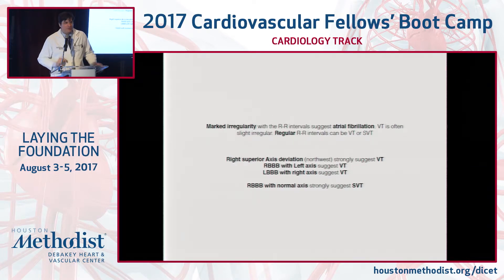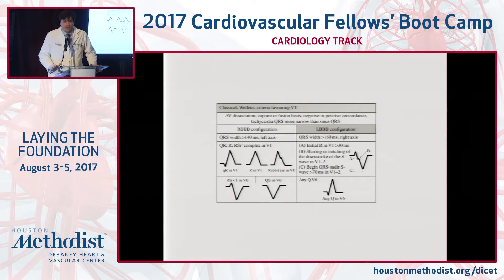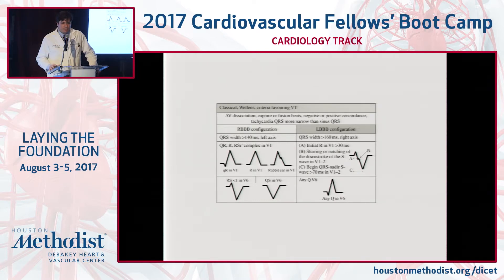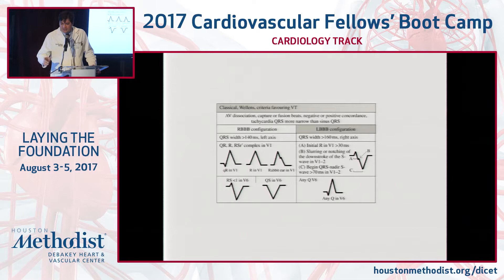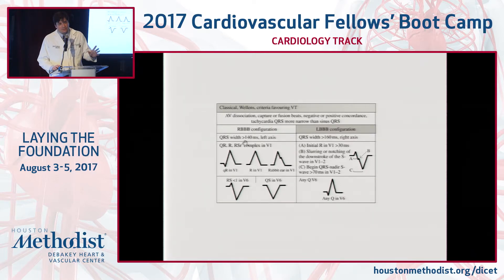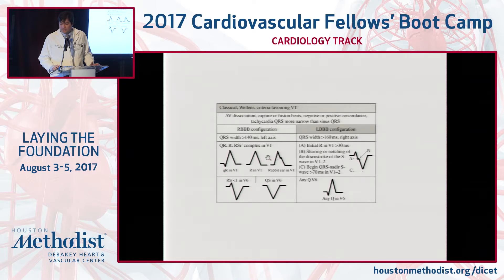The only exception for the axis caveat is when you have prior MIs — axis can change. There are many criteria and algorithms out there. The Wellens algorithm is one of the most useful and common — it's a stepwise process. Others rely on a single lead; the newest is AVR-based. The Wellens algorithm covers AV dissociation, capture beats, fusion beats, and negative-positive concordance — all favoring ventricular tachycardia. If you have a right bundle configuration with QRS greater than 140 milliseconds, that suggests VT. If you have left axis, same thing. Regarding morphology: the rabbit ear — the later portion should be the tallest, not the earliest. A small Q and R, or a tall R in V1, is very likely ventricular tachycardia.